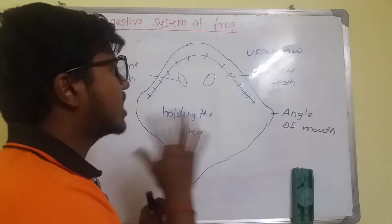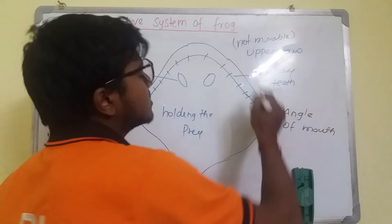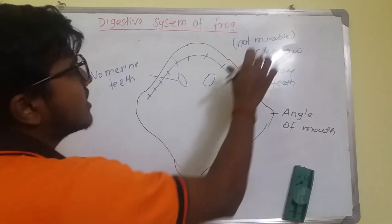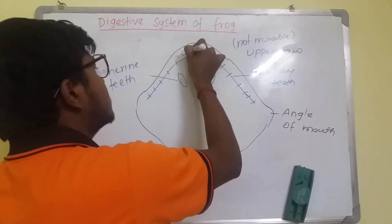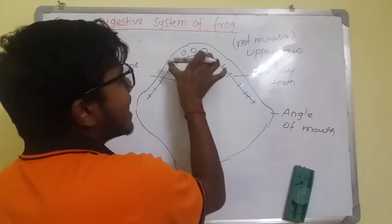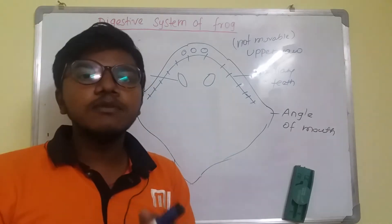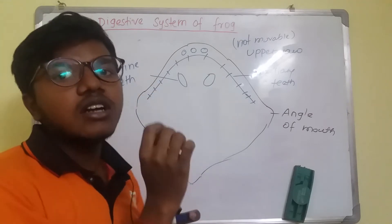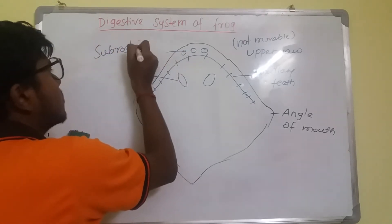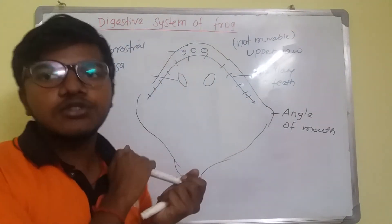There are no lips or cheeks in the frog. The upper jaw is not movable, whereas the lower jaw is movable. Between the outer part of the oral aperture and the maxillary teeth there are three depressions or fossa, in a region called the pre-maxillary area. These are known as subrostral fossa — a median subrostral fossa and two lateral subrostral fossae — which help in breathing while the mouth is closed.